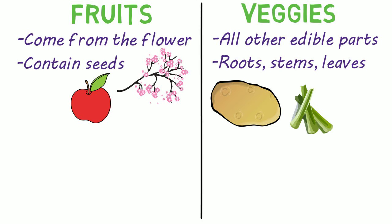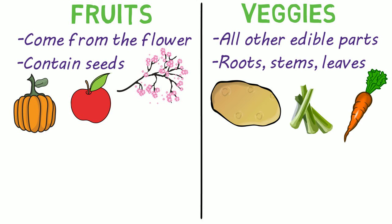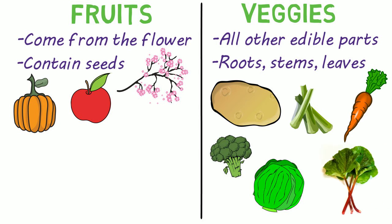As mentioned earlier, pumpkins are a fruit, along with all varieties of squash. They grow from the flower of the plant and also contain seeds. Carrots, broccoli, lettuce, and rhubarb are all veggies.